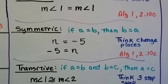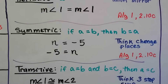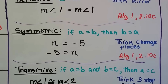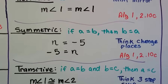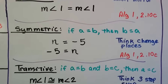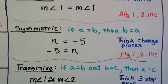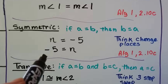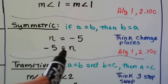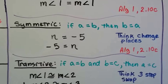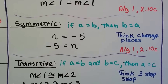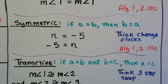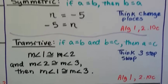The symmetric property of equality says if A equals B, then B equals A. If we have N equals negative 5, we can swap places and write negative 5 equals N. Think of changing places for the symmetric property. That was also covered in Algebra 1, 2.10c.